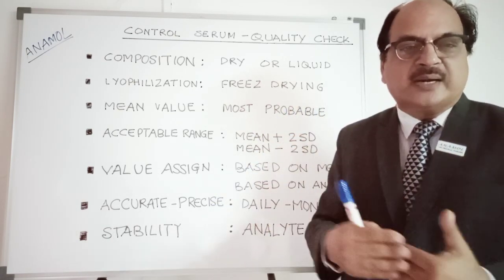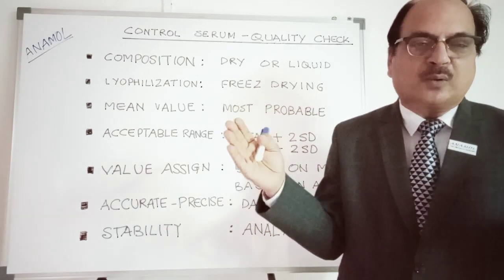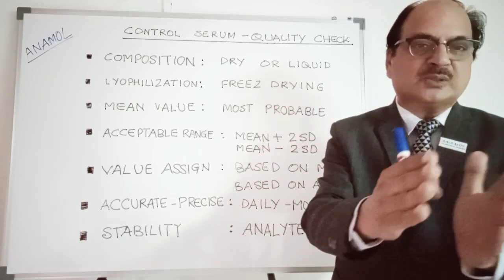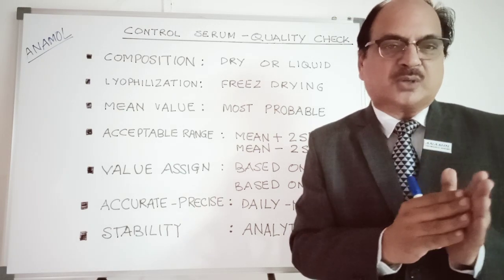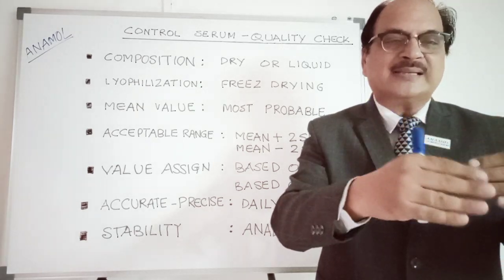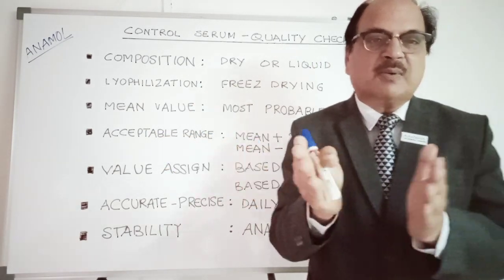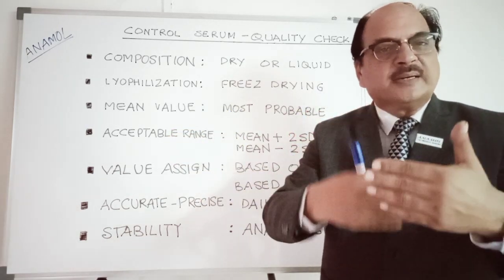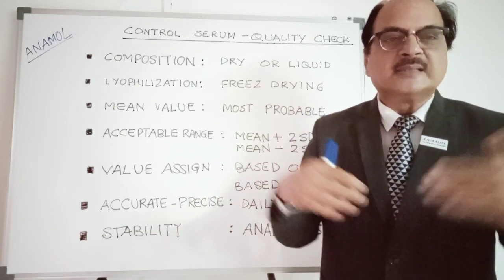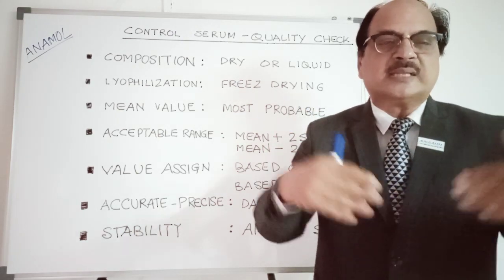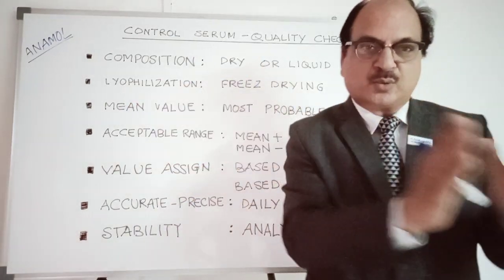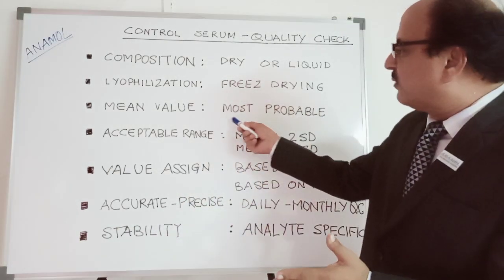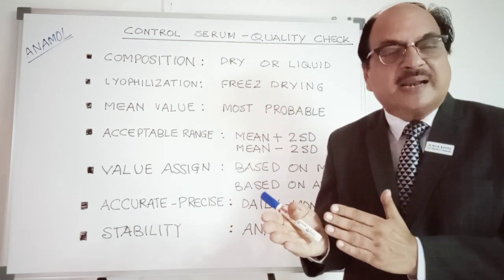Let me explain mean and standard deviation. When you prepare a control serum in a large number of vials and distribute them to various laboratories for analysis, take for example HDL cholesterol. If 200 vials are given to 200 different laboratories — some using the precipitating method, some using the direct homogeneous method — each laboratory repeats the analysis 10 times and reports results to a central laboratory. The central laboratory takes all 200 values, adds them up, and divides by 200 to get the mean value, which is the most probable value.